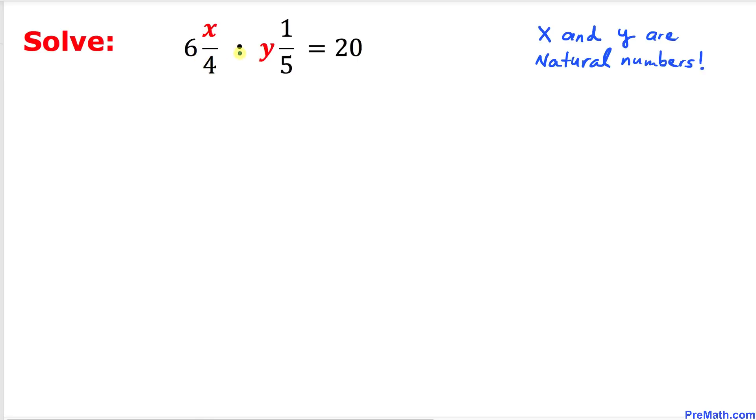Where x and y are natural numbers. So before we go any further, let's talk about mixed numbers. Here's our example for a mixed number: we got 3 and a half, which is a mixed number.